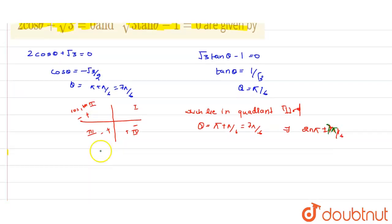Now the general solution for cos theta: cos theta equals x, where theta equals 2 n pi plus or minus theta where n belongs to integers. Similarly for tan theta, the general solution is theta equals n pi plus theta when n belongs to integers.